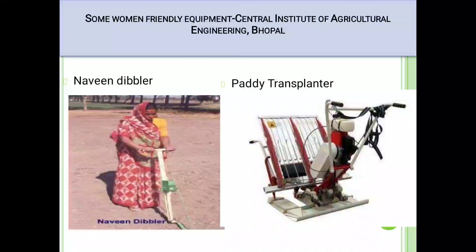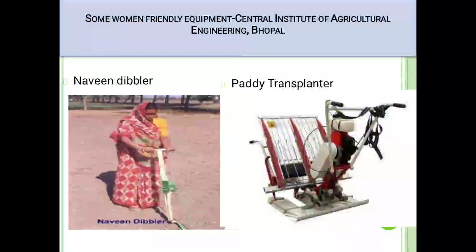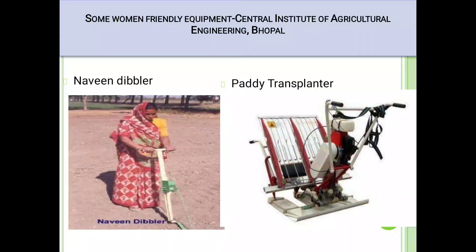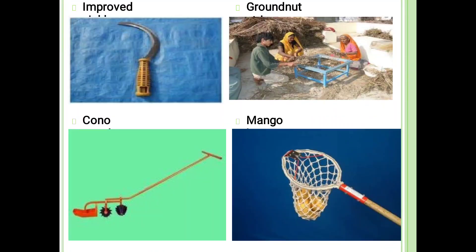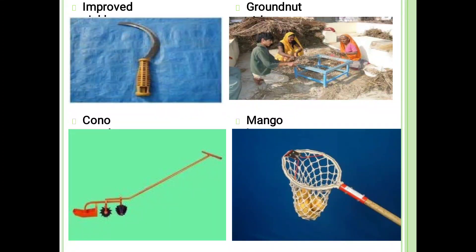That is the Nawindibular. These women have operated this Nawindibular in the field — how to operate it and what benefit we get after operating this implement in the field. Paddy transplanter is also developed at CIAE Bhopal. Next one is the improved sickle. Second one is the groundnut stripper — these people are doing the breaking of pods from groundnut. Second one is the cone weeder, and last one is the mango harvester.